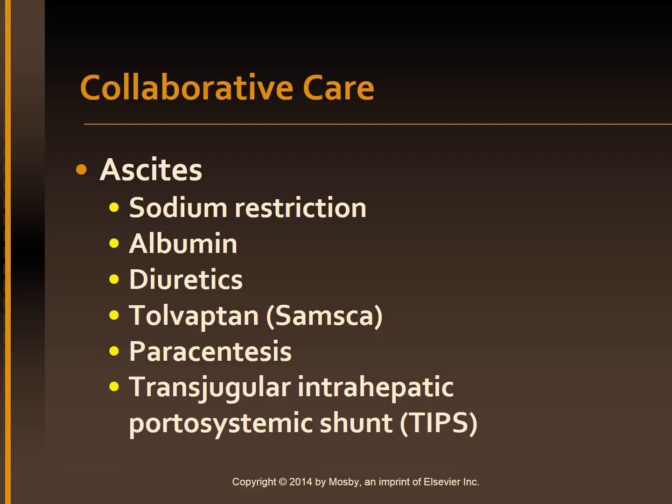Transjugular intrahepatic portosystemic shunt (TIPS) is a procedure used to alleviate ascites that does not respond to diuretics. TIPS may be done multiple times until a liver transplant becomes available.